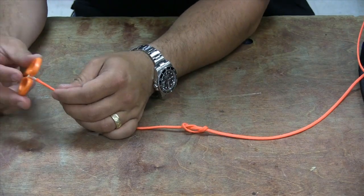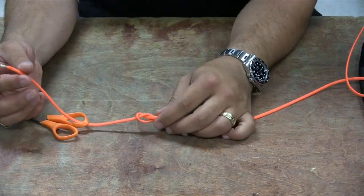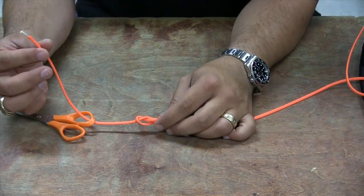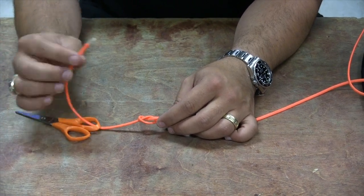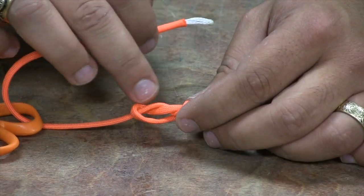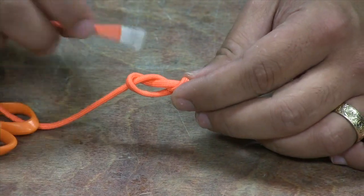From this point what you're going to do is you're going to put whatever you're going to tie your loop knot to through the tag in through the loop. You're then going to follow the tag, it's going to follow where the main line is running through this figure 8 knot.